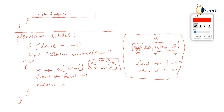Calling delete again: x = a[front] = a[1] = 20, so 20 is loaded in x. Front becomes front + 1, so front moves from 1 to 2, appointing 30 as frontmost. We return 20. Keep calling delete: 30 is deleted and front becomes 3, then 40 is deleted and front becomes 4, appointing 50 as frontmost.